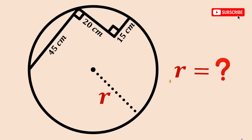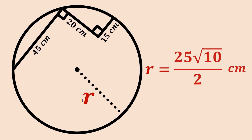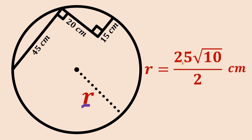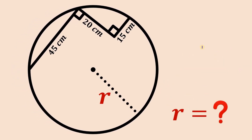Pause this video right now and see if you can answer this question, because I will show you the answer and the solution. The answer — the length of this radius — is simply equal to 25 times the square root of 10 divided by 2 centimeters. The question is how do we get this result? In this video I will show you two different methods to answer this question.